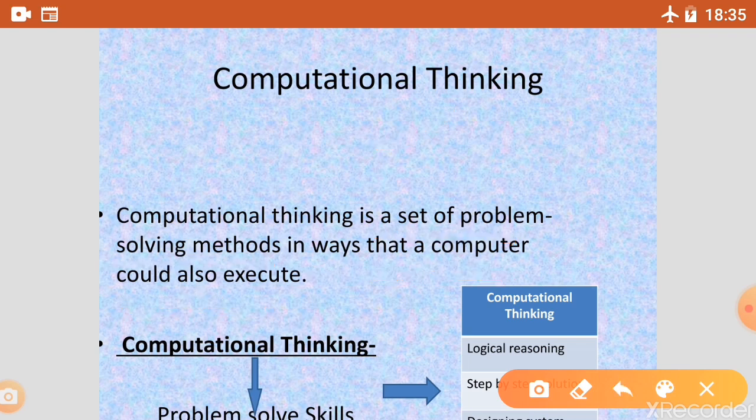I am repeating this definition again. Computational thinking is a set of problem-solving methods in the way that computer also executes. In the way computer thinks, we also develop the same type of thinking. So we will try to make you this type of thinking in this chapter.